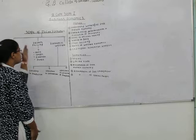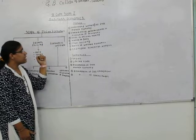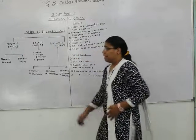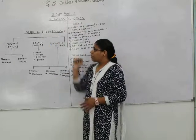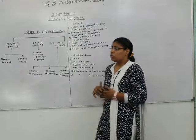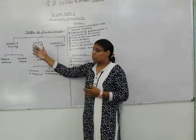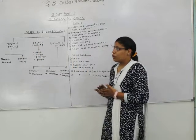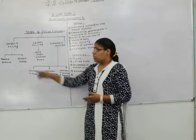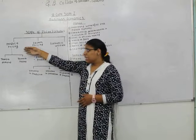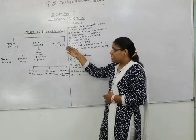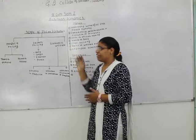Today we are going to discuss the scope of microeconomics and the merits of microeconomics. While discussing the scope of microeconomics, first we need to understand what scope means — the areas which are covered by microeconomics. It is broadly divided into three parts: first is theory of product pricing, second is theory of factor pricing, and third is theory of economic welfare.